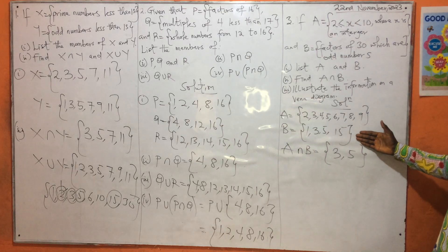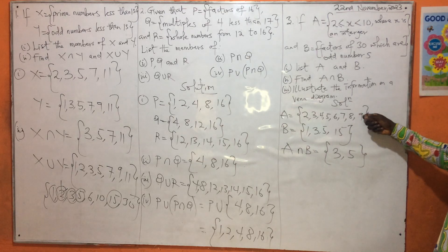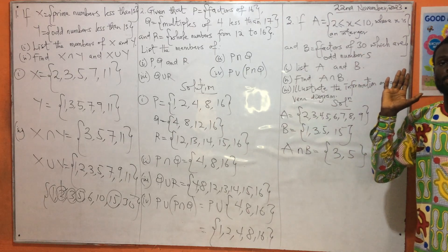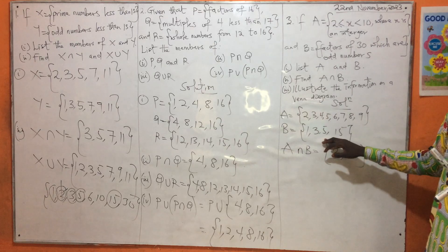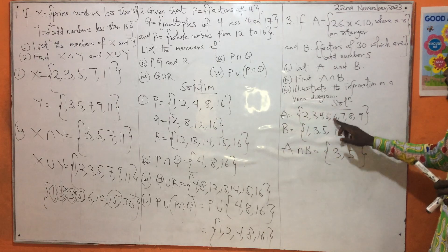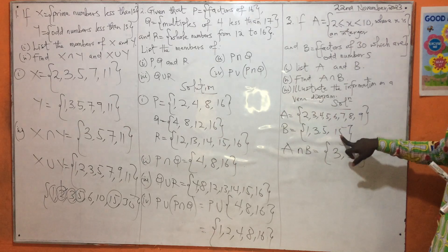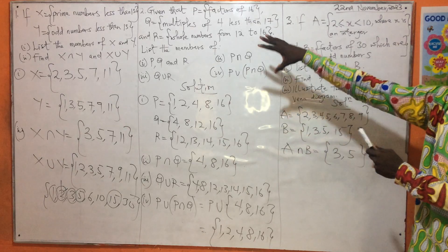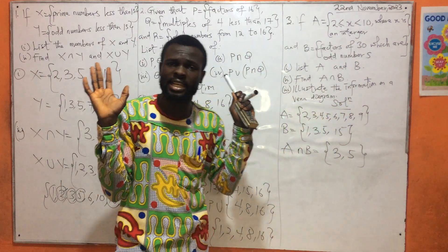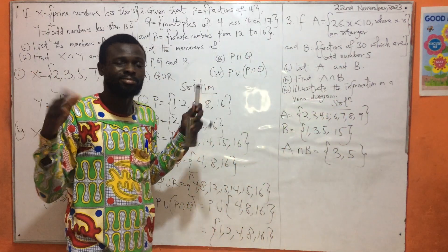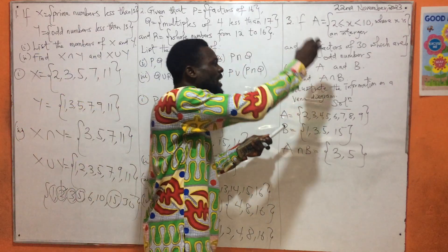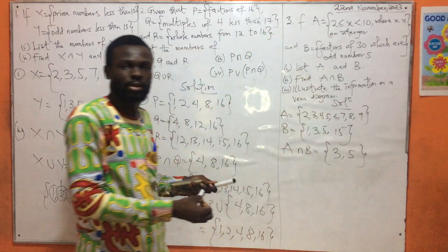To find A union B, we just combine the two sets. That gives you: 1, 2, 3, 4, 5, 6, 7, 8, 9, 15. But the question hasn't asked for it, so don't go and find it — else it won't be marked. The question is saying to illustrate the information on a Venn diagram.